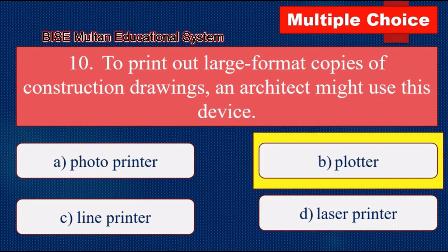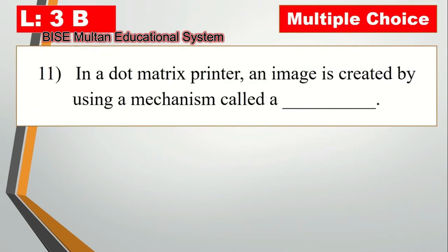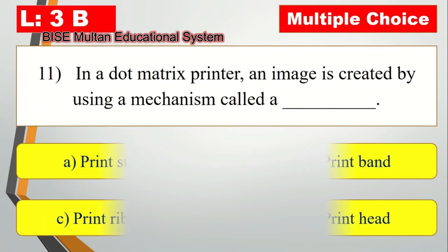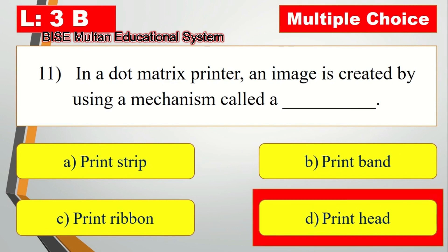Question number 11. In a dot matrix printer, an image is created by using a mechanism called a blank. The answer is print head.